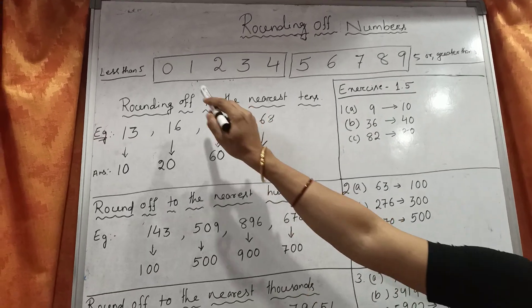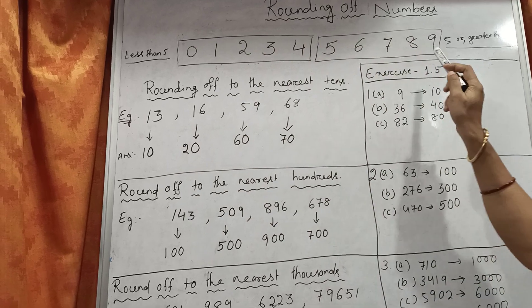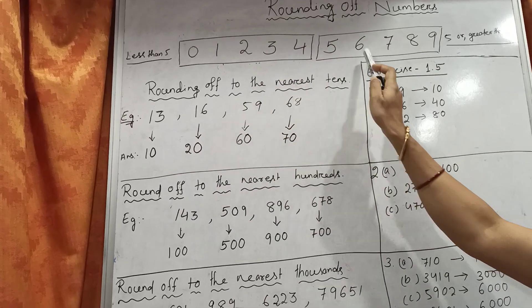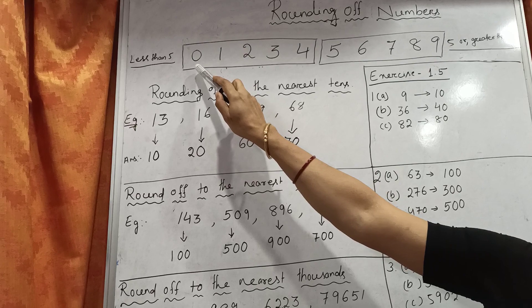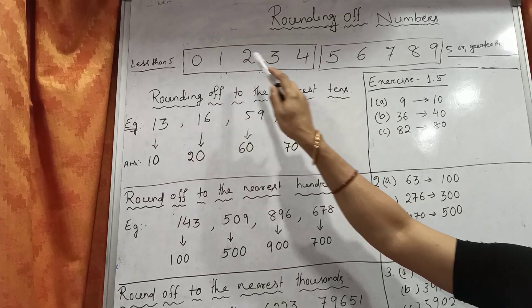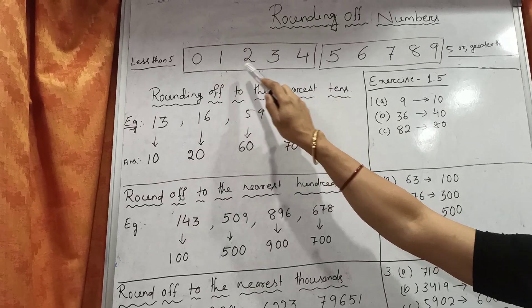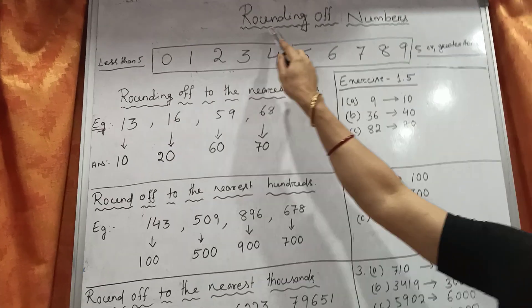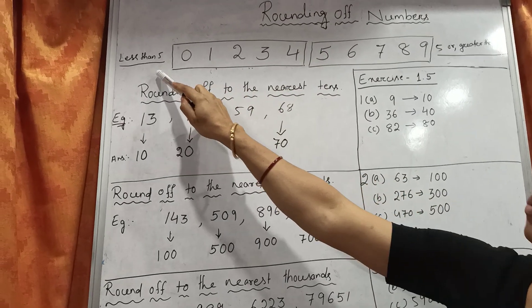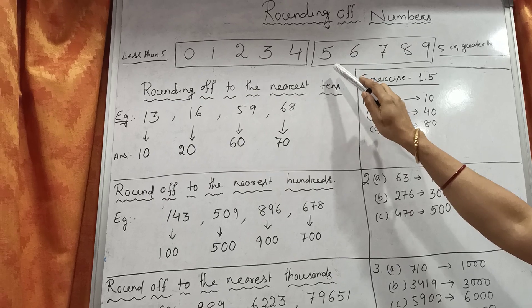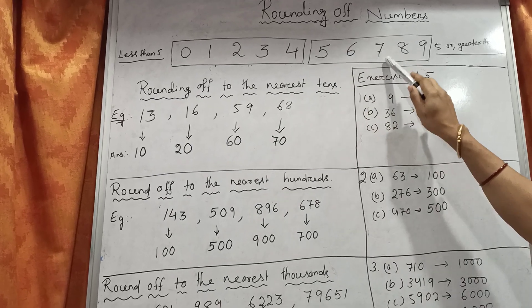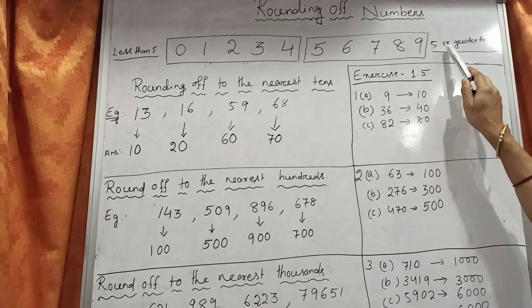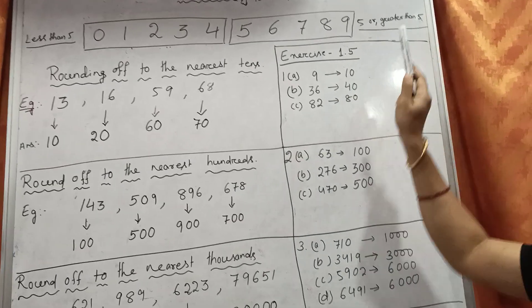I have written all the digits from 1 to 9 and divided them into two parts. In the first part I have written all the digits from 0 to 4: 0, 1, 2, 3, 4. These digits are less than 5. And in the second part I have written 5, 6, 7, 8, 9. All these digits are 5 or greater than 5.